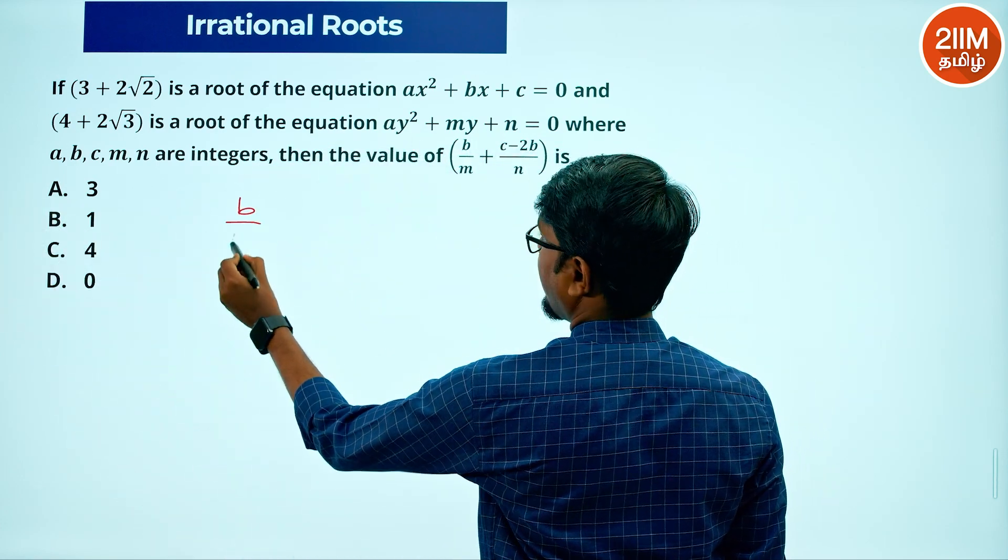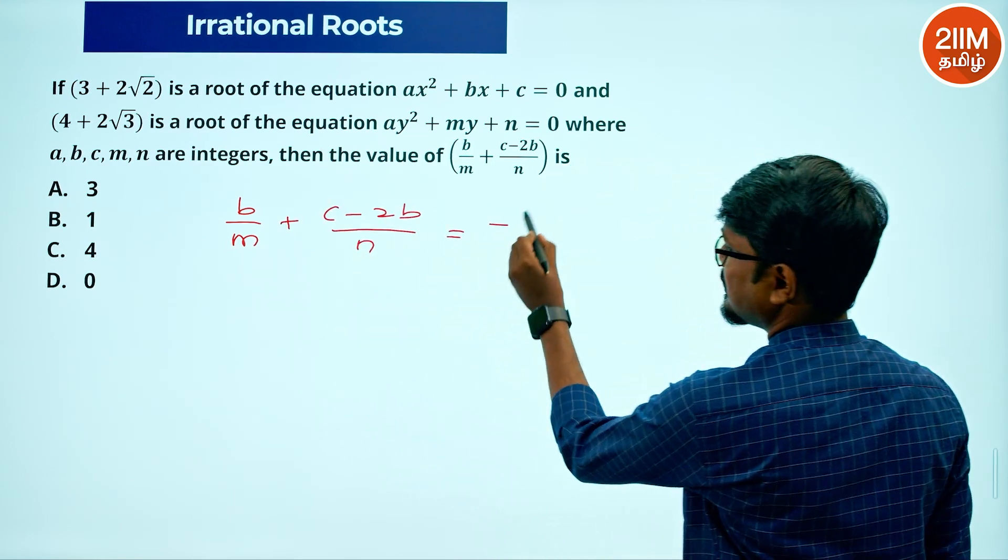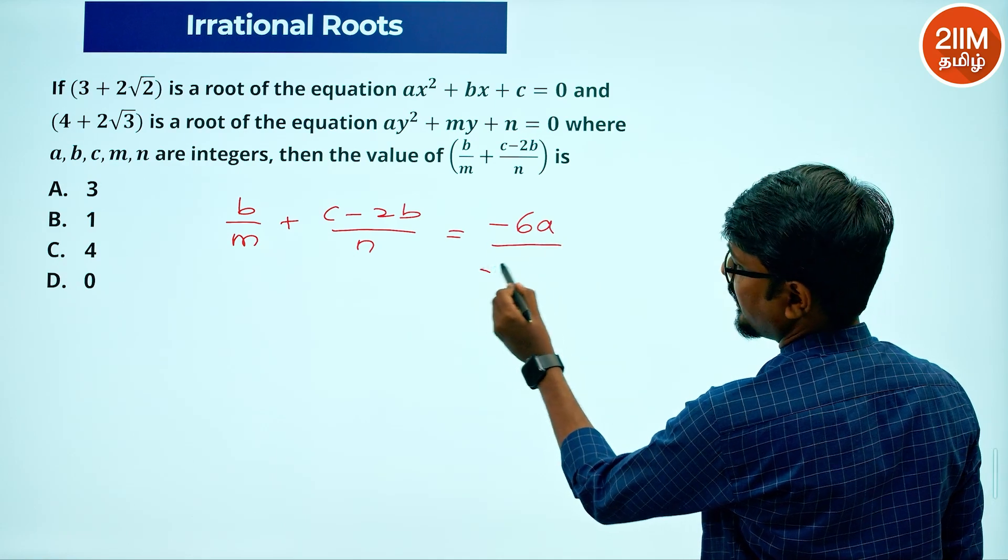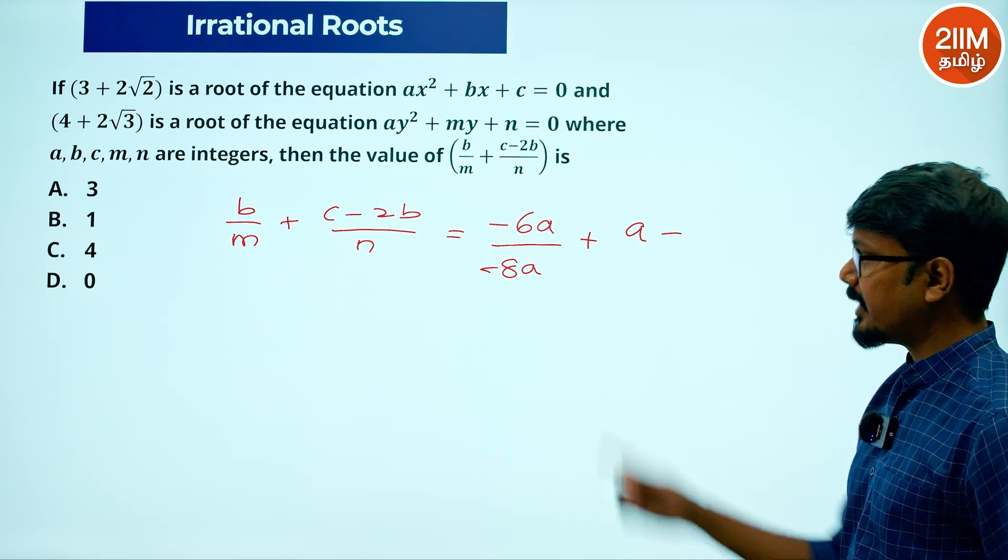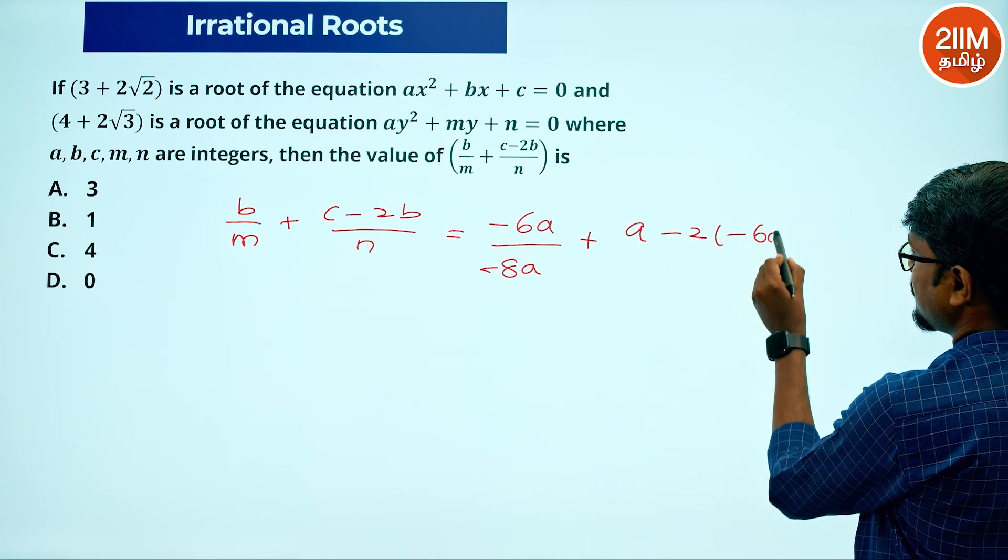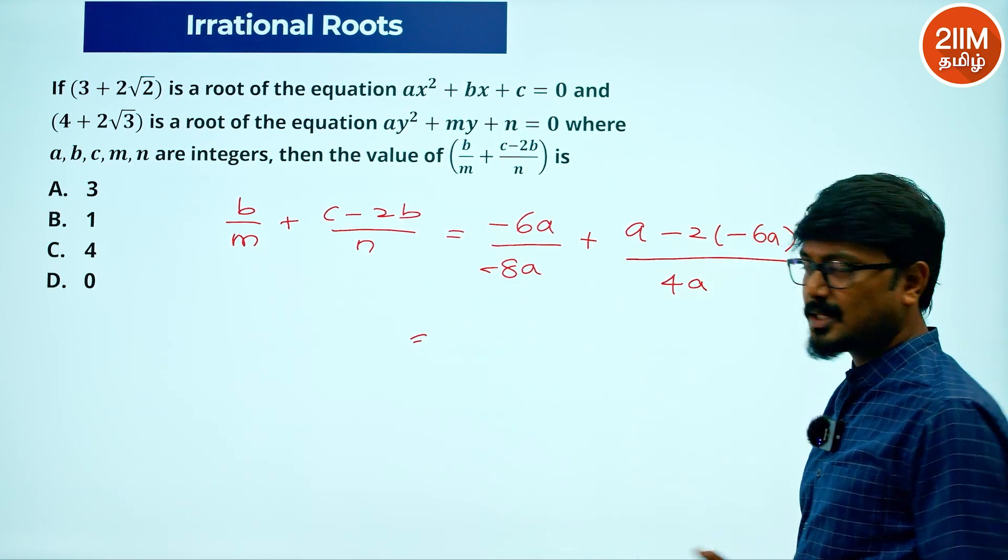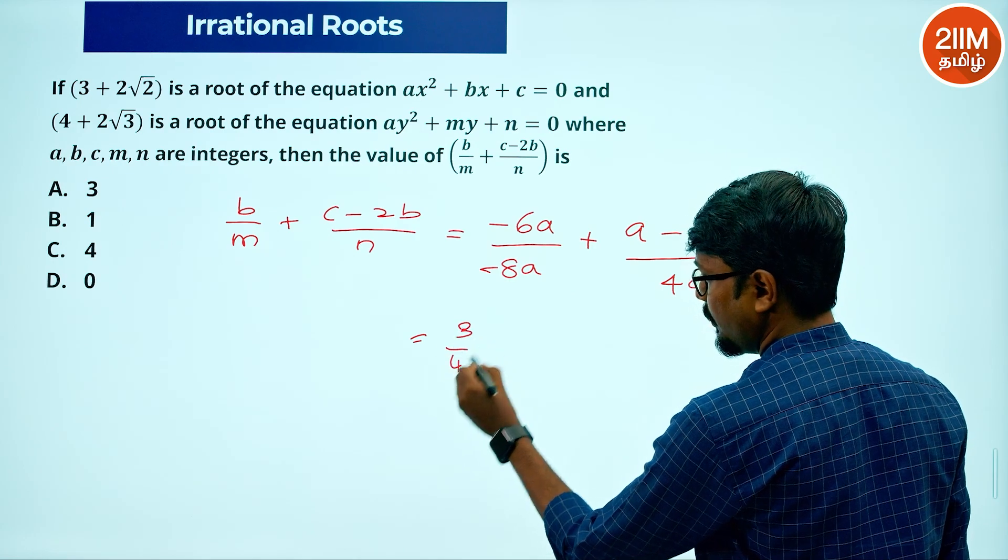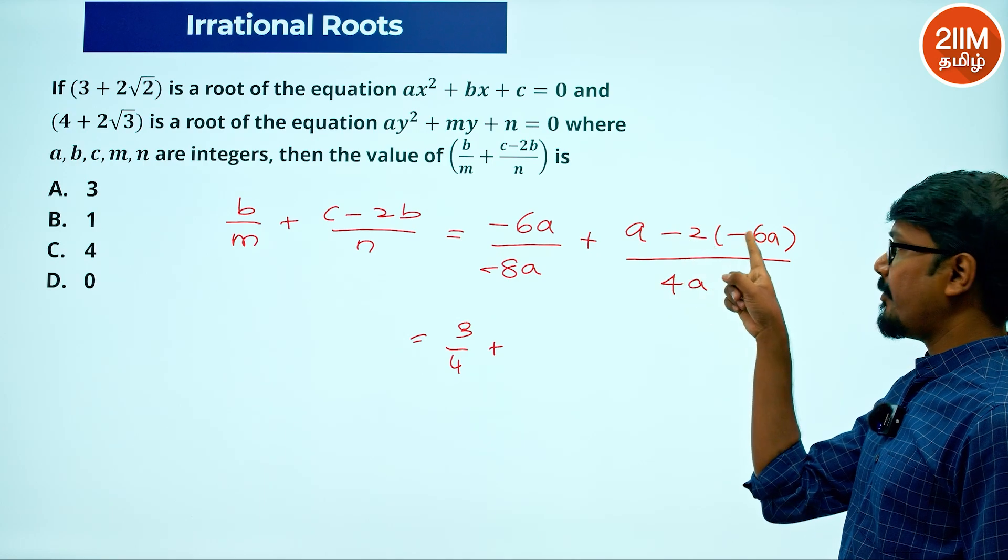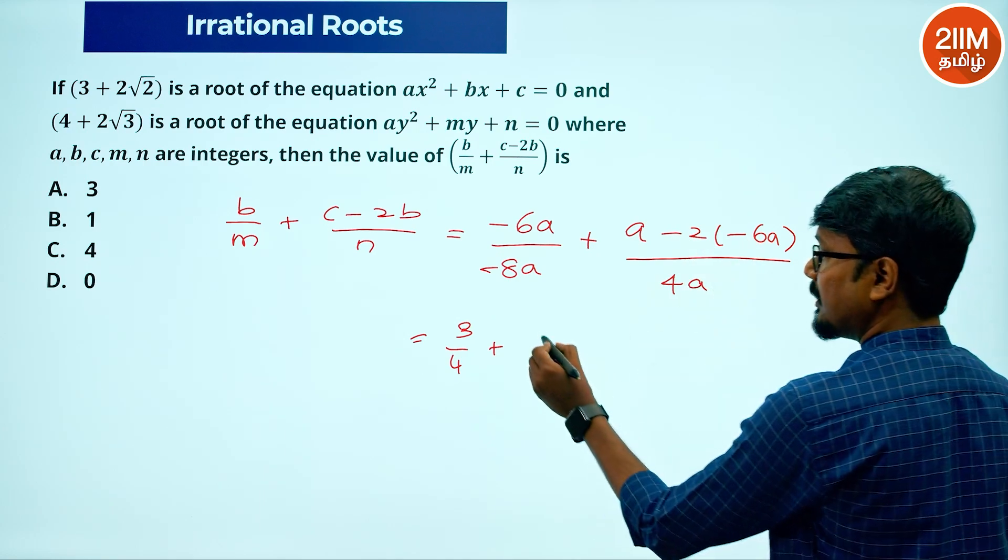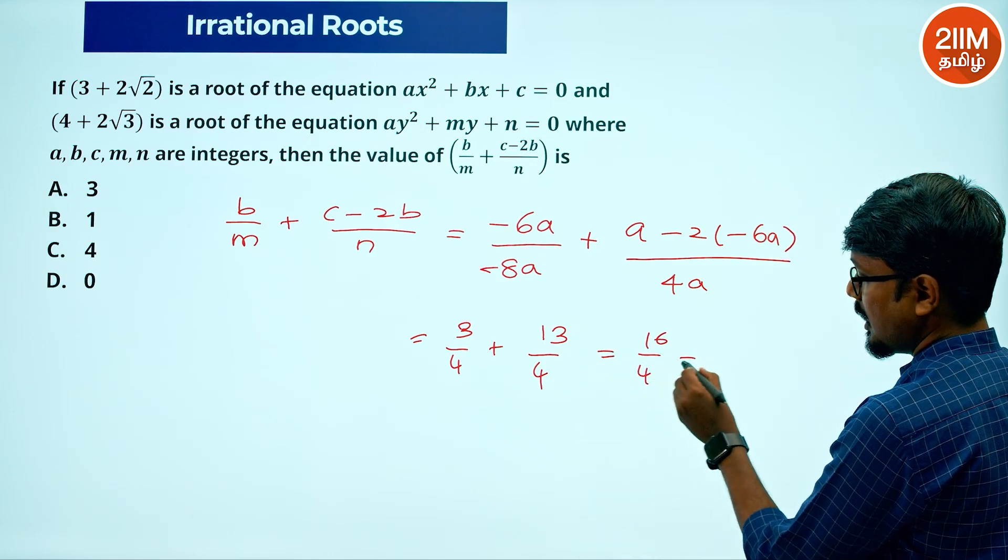Then b by m plus c minus 2b by n. We saw b is minus 6a, so m is minus 8a plus c, which is a, minus 2b, which is 2 times minus 6a, all divided by 4a. Minus minus cancels, a cancels. We get 3 by 4. Here, taking a common and cancelling, minus 2 times minus 6 is plus 12. So 1 plus 12 is 13 by 4. Wait, 16 by 4 is 4.